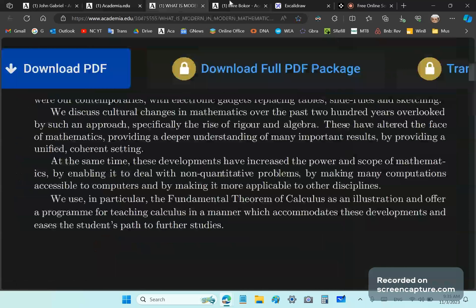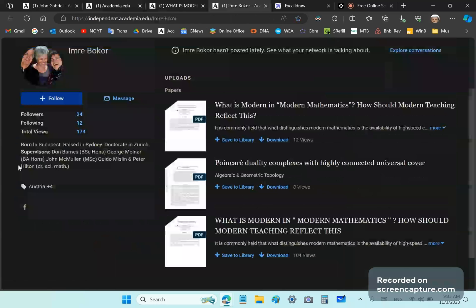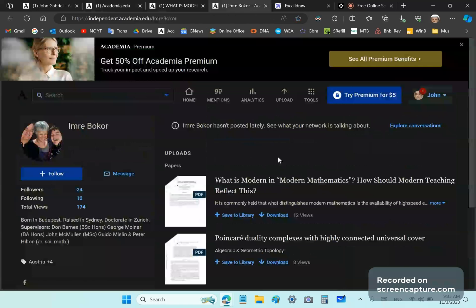Let's just look at the author here. The author is born in Budapest, Hungary. She's reared in Sydney, not raised, reared. She has a doctorate in Zurich and her supervisors were these morons, Don Barnes, George Molnar, McMullen, and Peter Hilton. This poor lady has three articles here. She's got 24 followers.